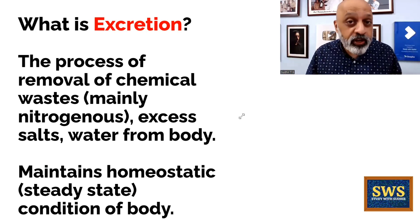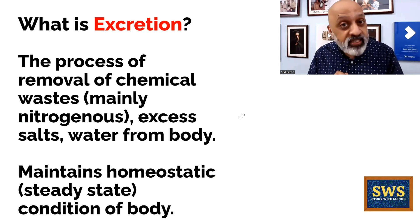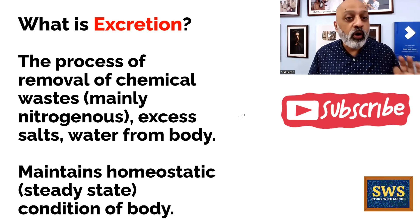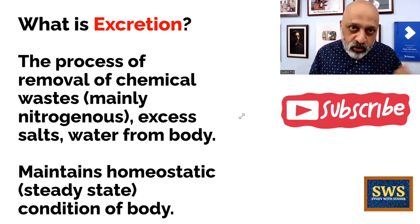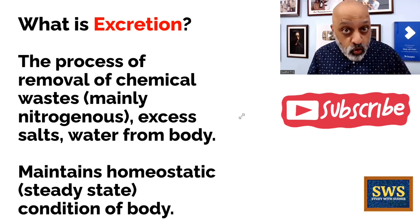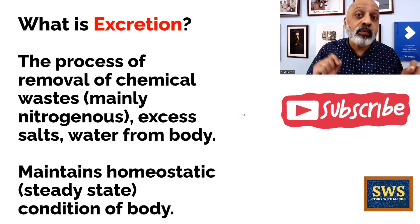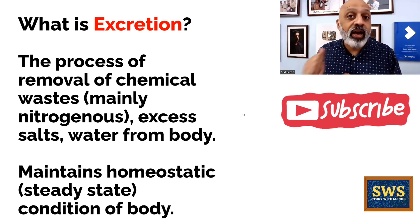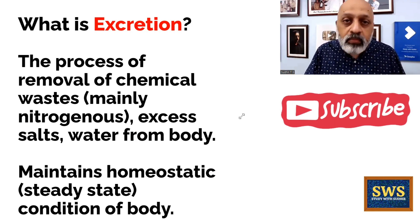Before we start, we need to understand what exactly we mean by the word excretion. The definition is: the process of removal of chemical waste — and when we say chemical waste, we are essentially talking about nitrogenous waste, excess salts, and water from the body. This happens in different ways. So the definition is that it is a process of removal of chemical waste, mainly nitrogenous, excess salts and water from the body. And what is really the aim of excretion?